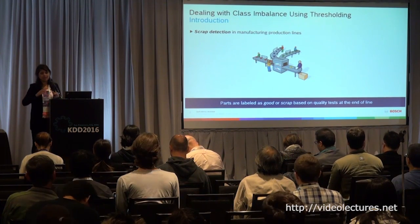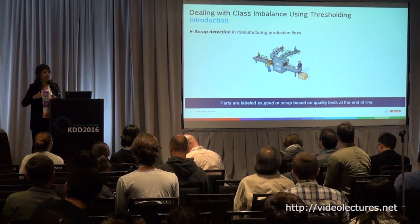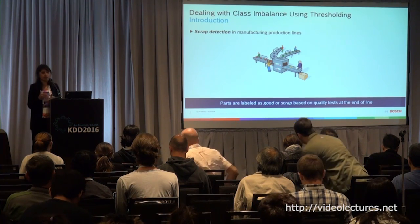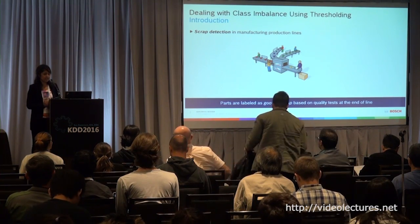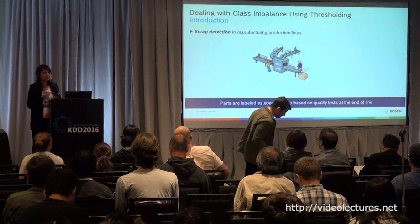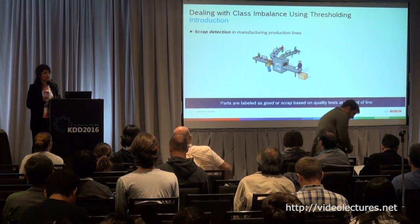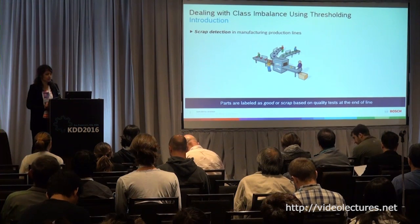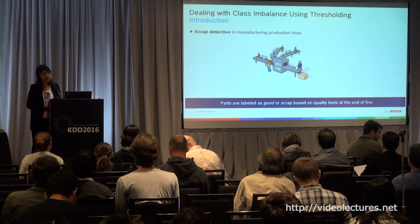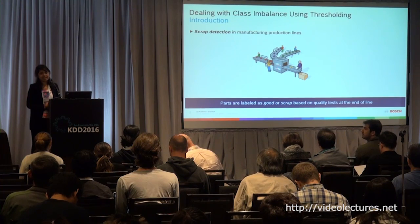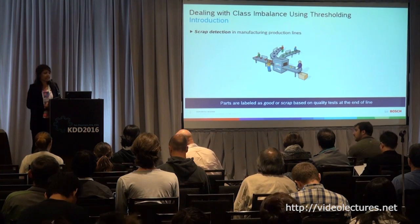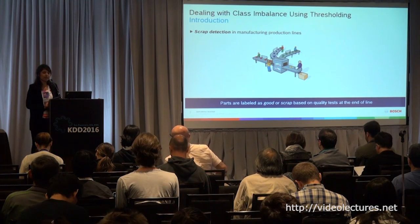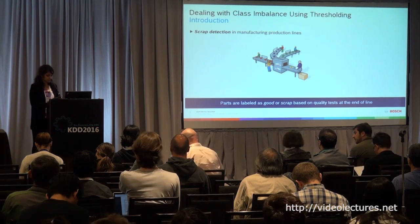Once things come out of the assembly line, you have a testing line where you test the quality of the product. Parts, or instances of the product being manufactured, are labeled as good or scrap based on the quality test at the end of line. If it fails the quality test, it's called scrap; otherwise, it's called a good part.